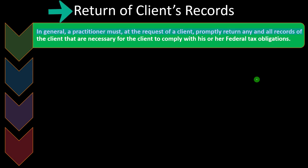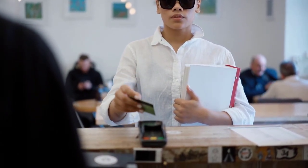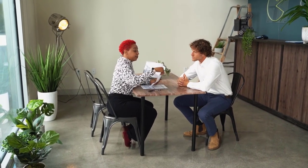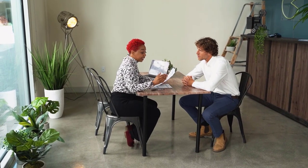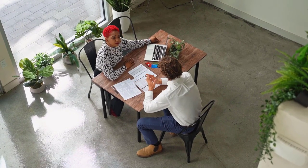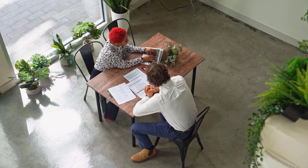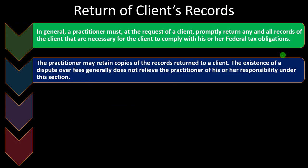Return of client's records. In general, a practitioner must, at the request of a client, promptly return any and all records of the client that are necessary for the client to comply with his or her federal tax obligations. There are instances — like if a client hasn't paid you — where you might think about holding their records, but you've got to give them their records back and take some other action, like cutting future engagements. The practitioner may retain copies of the records returned to a client. The existence of a dispute over fees generally does not relieve the practitioner of this responsibility.